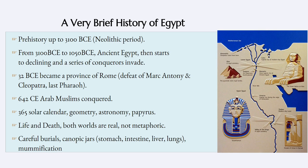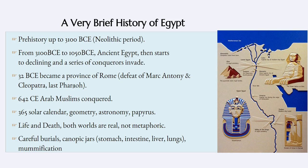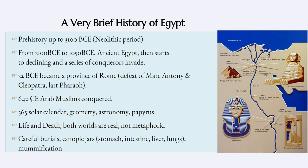Egypt is still a complete state run by pharaohs until 32 BCE, where it becomes a province of Rome, and the last pharaoh is Cleopatra. The disastrous love affair between Mark Antony and Cleopatra leads to the ending of total Egyptian rule. The Roman province of Egypt lasts all the way until 642 CE, when Arab Muslims conquered it, and that lasted all the way into the modern age and the Ottoman Empire.